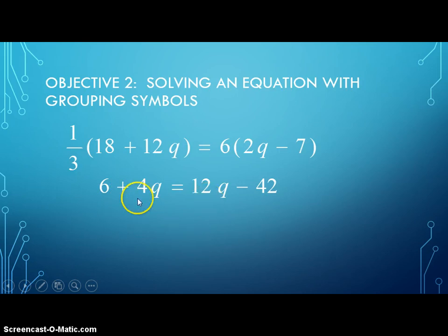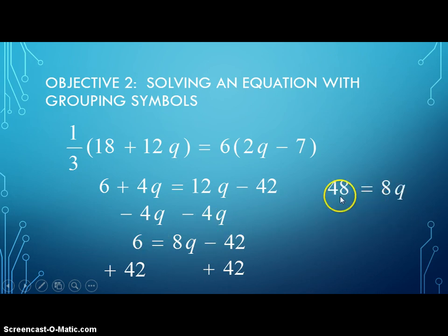I'm going to subtract 4q because I want that variable term to be positive. Again, that's just my personal preference. So I subtract 4q from both sides. 12 minus 4 is 8q. Now I have to move this 42 over here. So I'm going to add 42 to both sides to get it away from the 8q. And that leaves me with 48 equals 8q. Divide both sides by 8. And bam, we have 6 for the value of q.